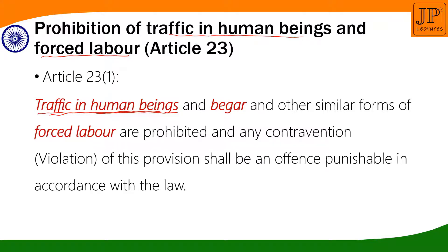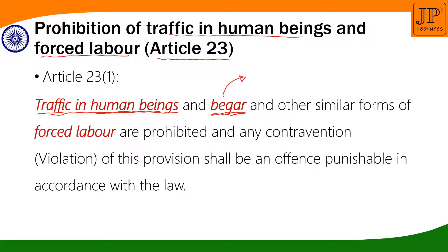Human trafficking is illegal as per the Indian Constitution under article number 23. The second term is 'beggar,' which is a form of forced labor — meaning involuntary work without any kind of remuneration, that is, without being paid. In other words, a person is compelled to do work against his will without being paid for it. If you make someone work without giving any kind of salary, without being paid, it is known as beggar.